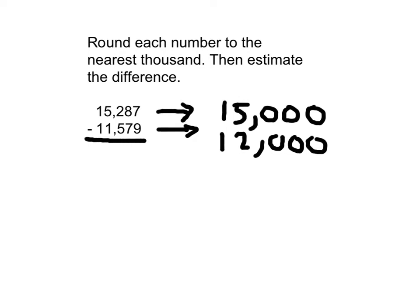And since we're estimating the difference, we will subtract the two numbers that we just came up with. 0, 0, 0, 5 minus 2 is 3, and 1 minus 1 is 0. When we're writing 3,000, we do not write 0, 3, 0, 0, 0. We just write 3,000.